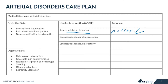Educating your patient on smoking cessation is another super important nursing intervention because smoking causes vasoconstriction and is the number one cause of complications in patients with arterial disease.